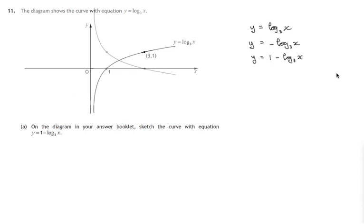And we now have the graph of 1 minus log to the base 3 of x. Let's label it: y equals 1 minus log to the base 3 of x. That's the curve we've been asked for.